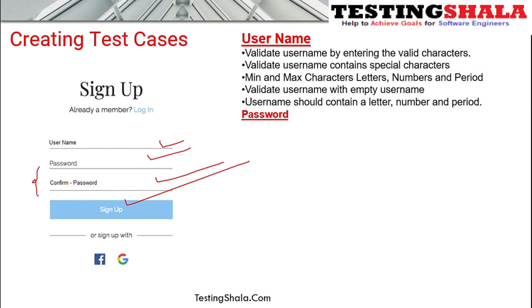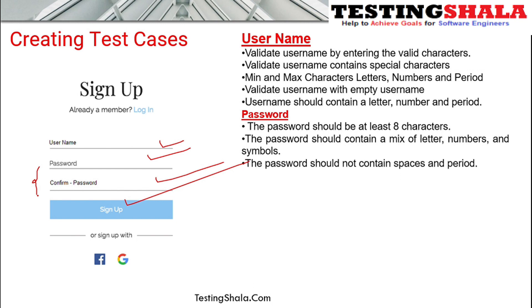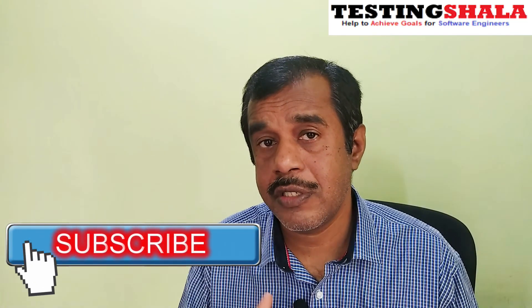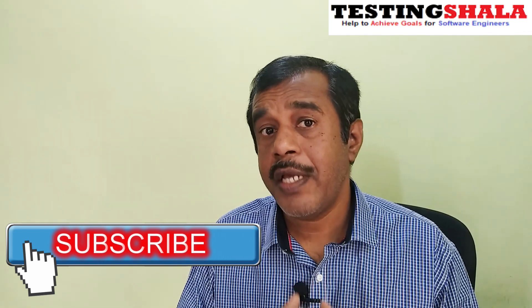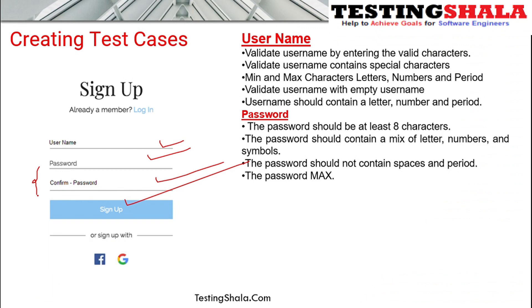For the password field, test cases should include: minimum eight characters, a mix of numbers, letters, and symbols, no spaces or periods allowed, and maximum character limits — all based on requirements provided by your business analyst or product owner. You should not assume these rules yourself; get them clarified with your product owner.